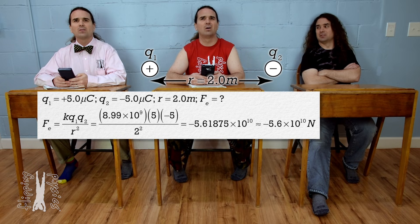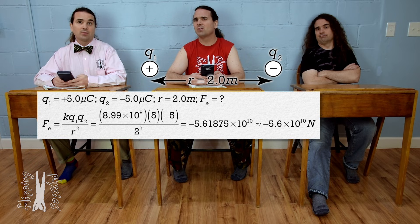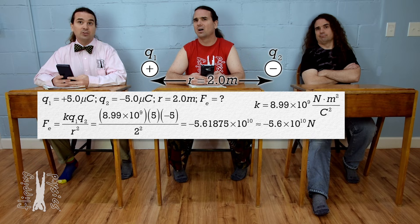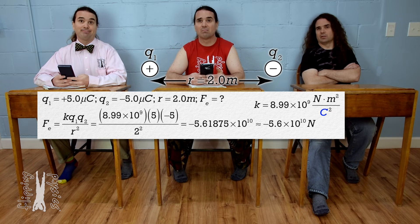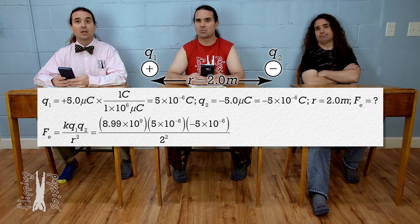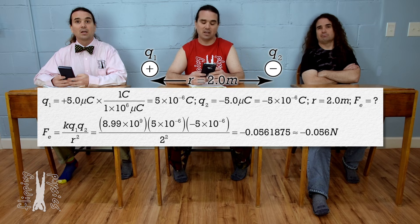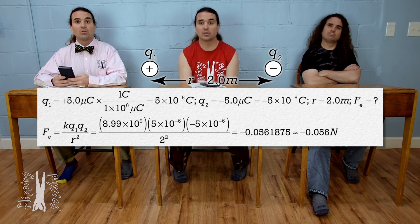We need to convert the charges to coulombs, not microcoulombs. The Coulomb constant is in newtons times meters squared per Coulomb squared, so the units need to match. Both charges have a magnitude of 5 microcoulombs, or 5 times 10 to the negative 6th coulombs. Substituting those charges into the equation gives negative 0.0561875, or negative 0.056 newtons with two significant digits.